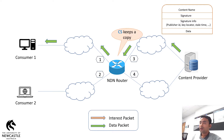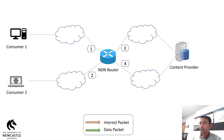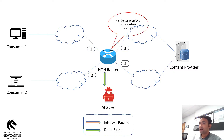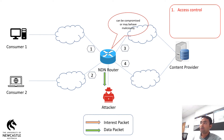While forwarding the data packets, intermediate routers can keep a copy of the data packets in their content store, so that if any other consumer or the same consumer requests the same content, the router can satisfy their request without contacting the content provider. Therefore, a content provider loses control of their data. If the routers are compromised or misbehave, then unauthorized entities may get access to the data packets, which can have a negative effect on the content provider's business. Therefore, access control is an important requirement which allows access to content only to authorized consumers.